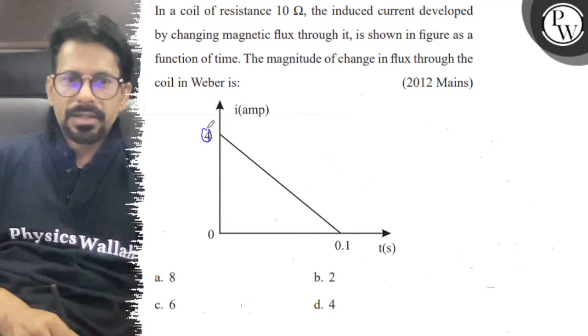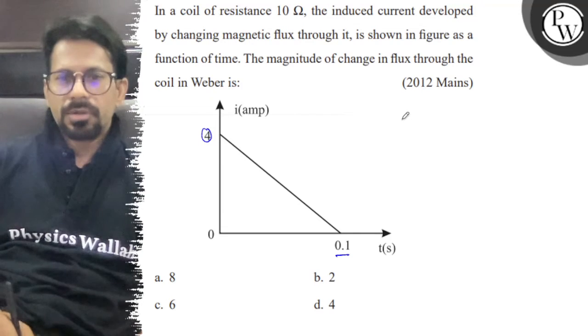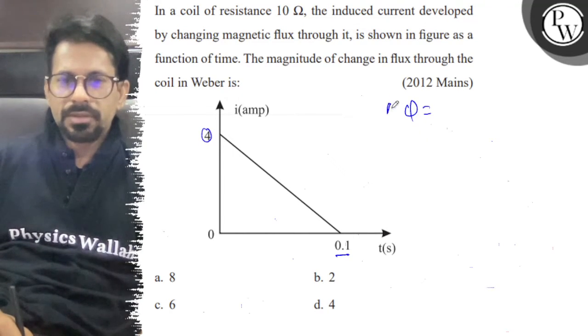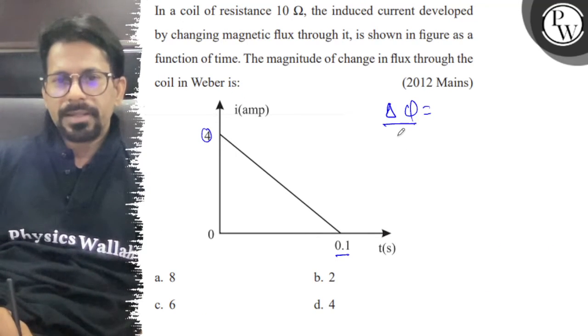Look, this is the I direction and this is the 0.1 second direction. So, if I write the flux, change in flux del phi is equal to del phi by del t.